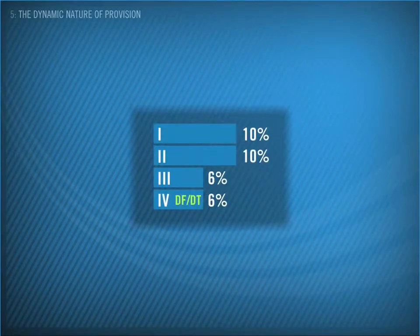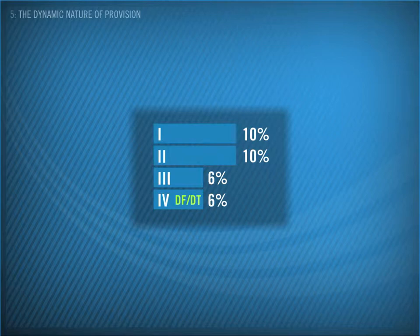Going forward, the four-block scheme of 10-10-6-6% with DFDT is what we propose as the next AUFLS scheme design for the North Island. The dynamic nature of provision affects how AUFLS is actually set up and made available in our system. Any changes will be reflected in the obligations outlined in the code.